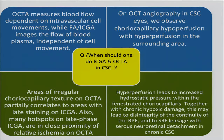We should know that OCT measures blood flow dependent on vascular cell movement — basically those RBCs moving. While FA and ICG are totally independent of cell movement; they depend on the flow of blood plasma and have nothing to do with the cells. That's very important to understand the difference between OCT angiography and ICG or FA.